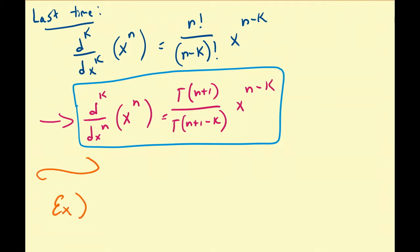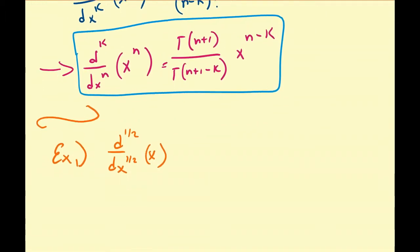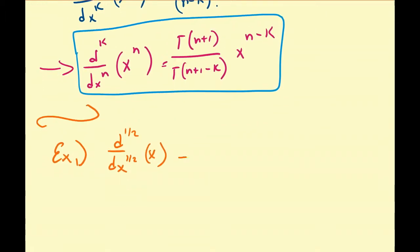Let's start off with a very trivial example. Suppose we want to find the half derivative of the function x. By this relationship, this is going to be equal to gamma of 1 plus 1 over gamma of 1 plus 1 minus one-half, times x to the 1 minus one-half, because the exponent on x is 1 by assumption.